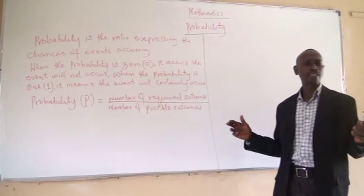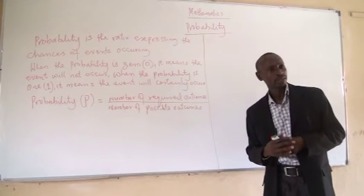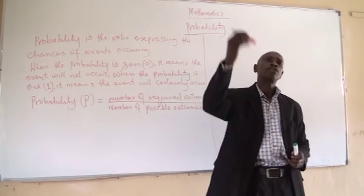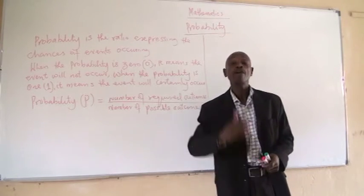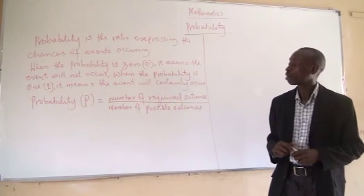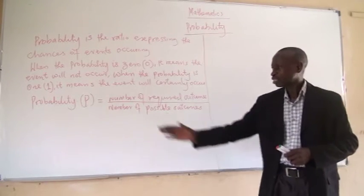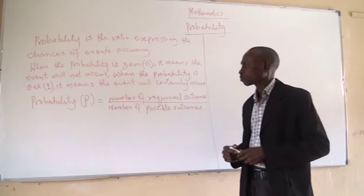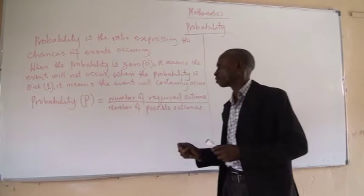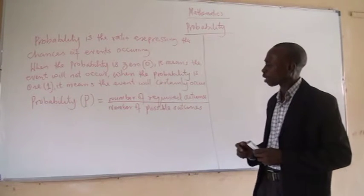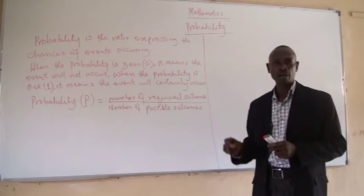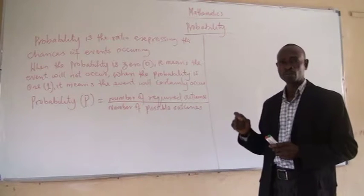Everything in this case is an event. Somebody walking into this room is an event. So everything in this case is an event. Probability has a formula, and we denote probability with the letter P. Probability P is given by the number of required outcomes all over the number of possible outcomes.